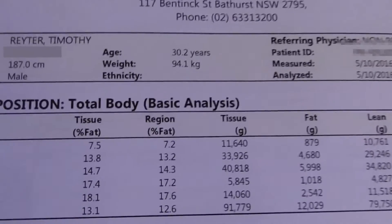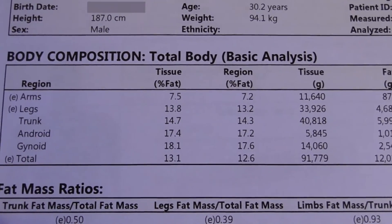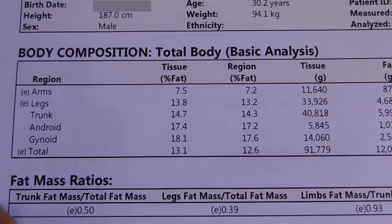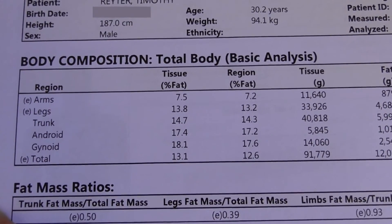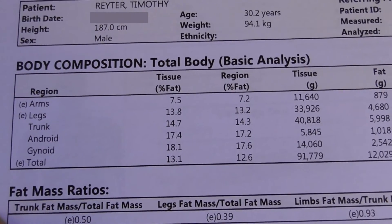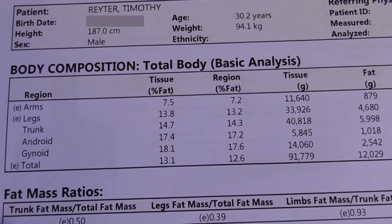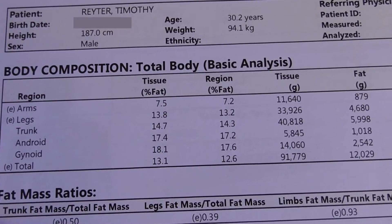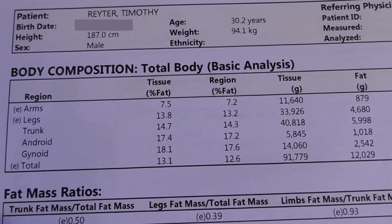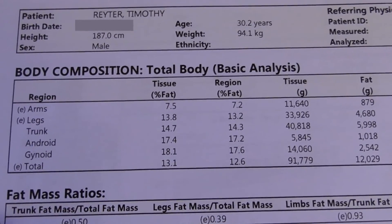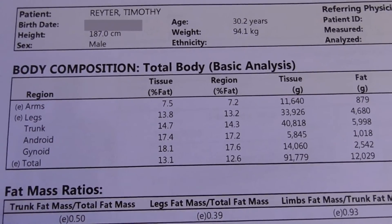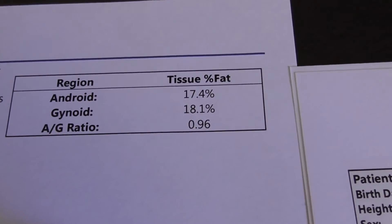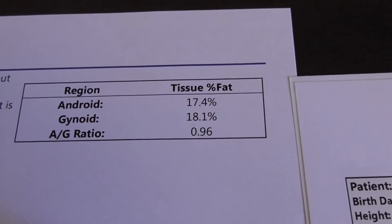Looking at the regional breakdown of fat percentage: 13.1% total. My arms don't really carry a lot of fat, which is cool. There's a fair bit of fat in my legs and trunk. Gynoid refers to hip fat and android refers to waist fat — I'm carrying a little bit more fat around my hips than my waist, but it's pretty even. They have an android-to-gynoid ratio, and mine is almost the same. So that's the DEXA scan.